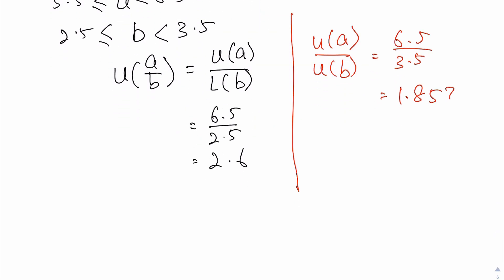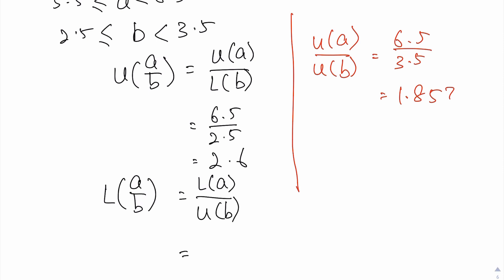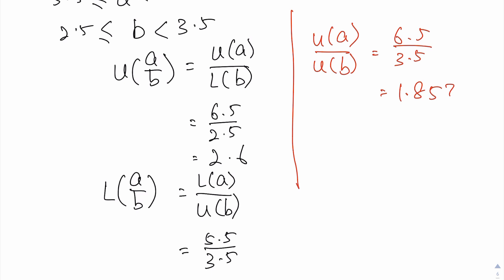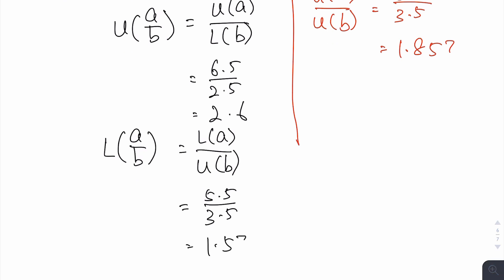To get the lower bound of a over b, can you guess what you need to put in for the numerator and denominator? For the numerator and denominator, you will need to substitute the lower bound of a divided by the upper bound of b, and that gives 5.5 divided by 3.5, which is 1.57.